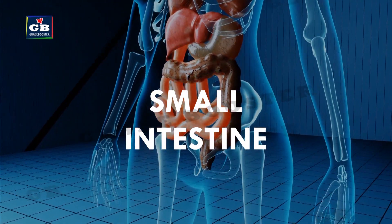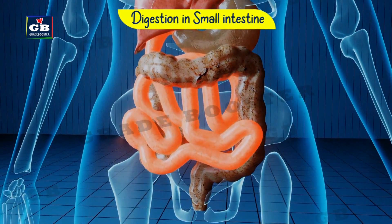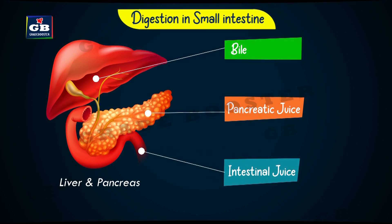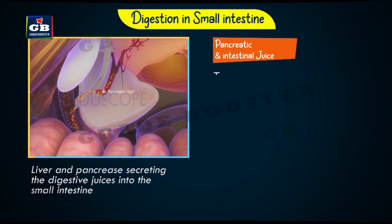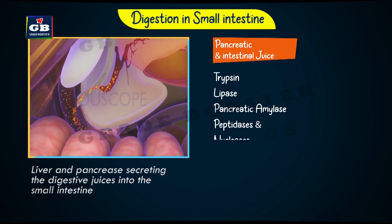The small intestine is the longest part of the alimentary canal and is highly coiled to fit in less space. The pancreas secretes pancreatic juice, intestinal glands secrete intestinal juice, and the liver secretes bile juice into the small intestine. Pancreatic juice and intestinal juice contain enzymes like trypsin, lipase, pancreatic amylase, peptidases, and nucleases, which help in the digestion of carbohydrates, fats, and proteins.